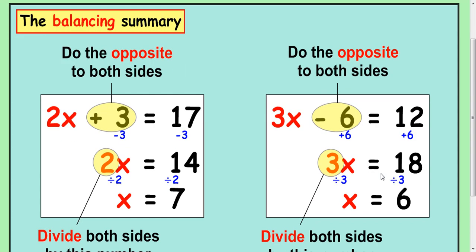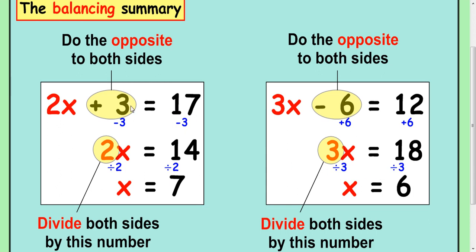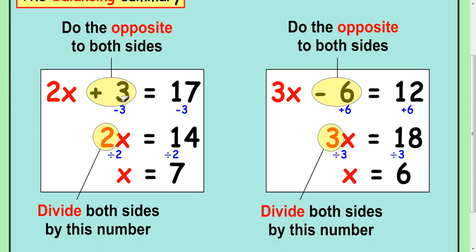So basically what we're looking at here, to summarise, you look at this here and you do exactly the opposite to both sides. And then at the end you divide by this number in the front to get your final answer. If there's a take away here, you plus to both sides. Again, you divide by this number to get down to your final answer. And the good thing is you can put it back in and test it. If you know x is 6, 3 times 6 is 18, take away 6 is 12. With this one, we know x is 7, 2 times 7 is 14, and 3 is 17.